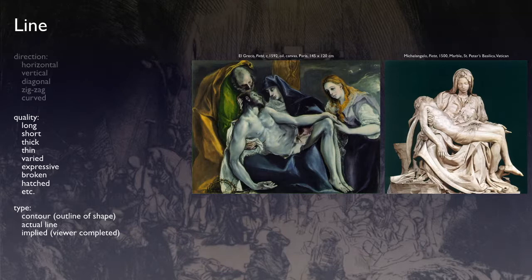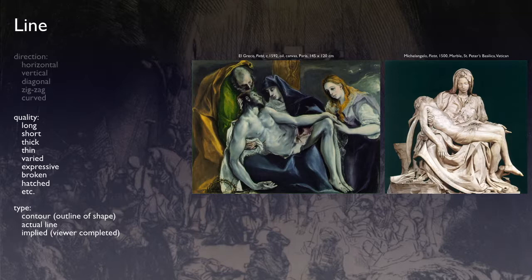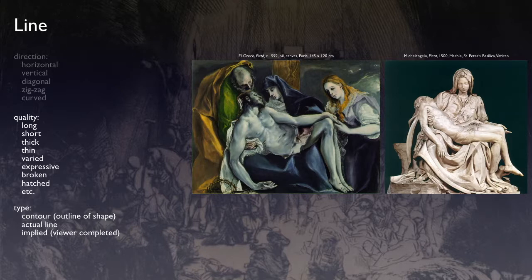And then we need to talk about quality of line. These are words that aren't necessarily coming from this list I'm providing — that's a good start, but you can create your own description. Lines can be long, short, thick, thin, varied, expressive, broken, hatched, etc. You look at the lines and you're talking about the quality of those lines. We also need to talk about the type of lines — this is different than the direction. We have contour lines that are on the outside of shapes or forms, actual lines where we actually see the brush stroke or the pencil line, and implied lines that we as the viewer see within the painting but where no line is actually created.